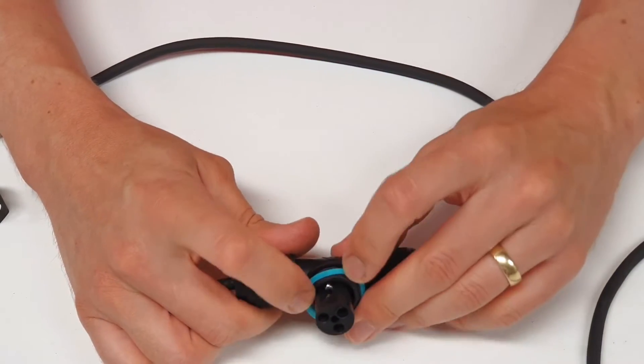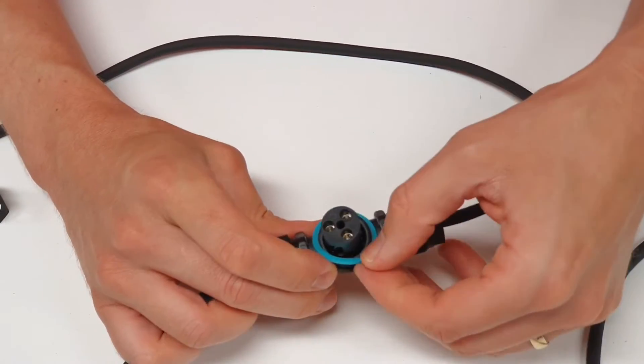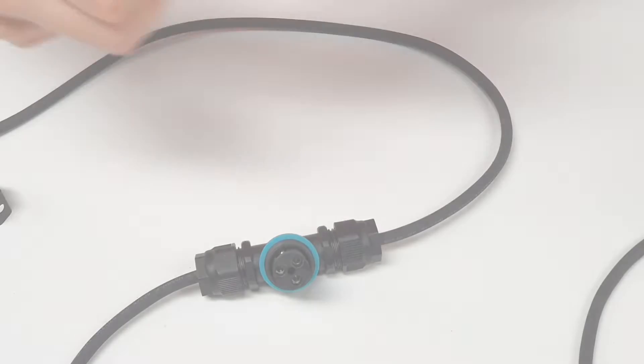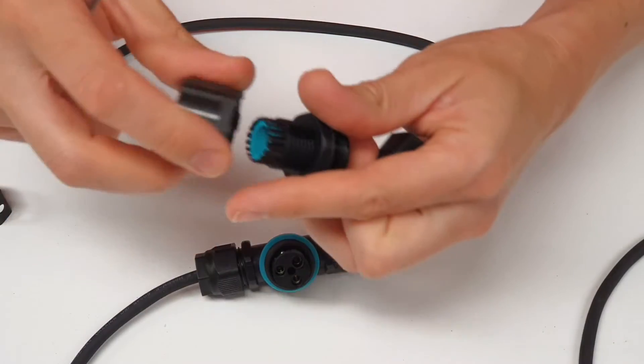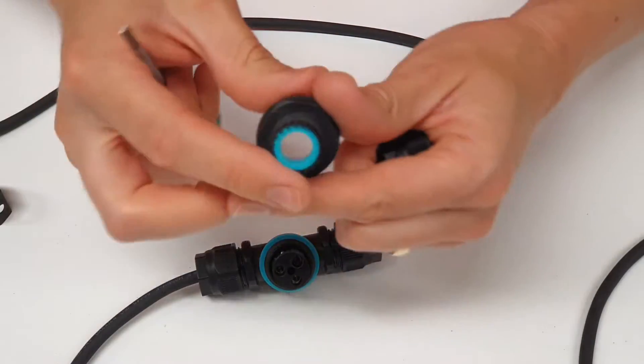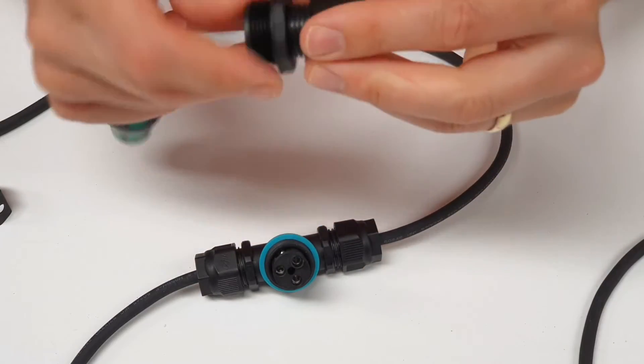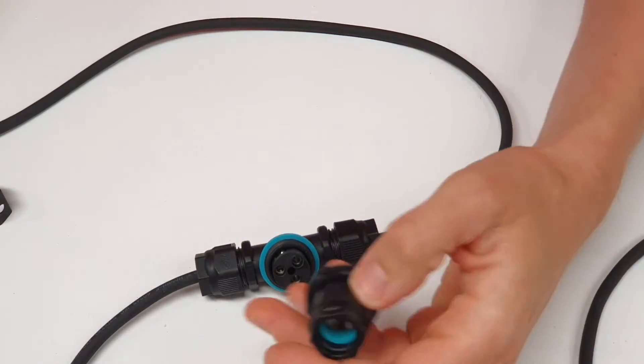Now I'm going to install this little washer here on the end of the cable that helps to maintain the IP rating. Now at this point don't whatever you do forget to slip these two parts over the cable that you're terminating from this end otherwise you'll need to undo your connections and start again.